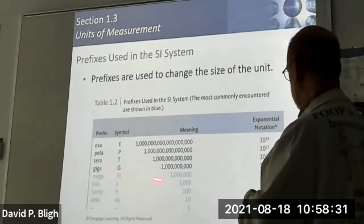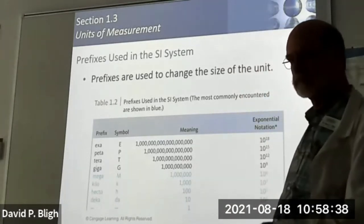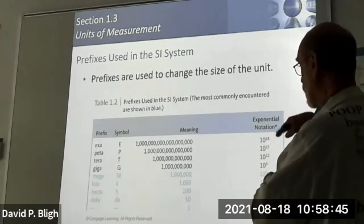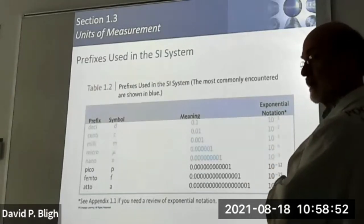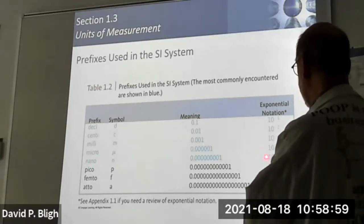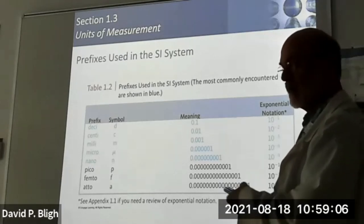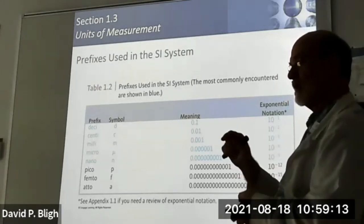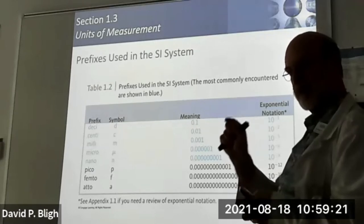We tend to weigh things in terms of grams — that analytical balance gives you the value in grams, not kilograms. You can go big with prefixes or very small. In the atomic sciences we use things like pico and femto. These are the exponential notations for those. The metric system is decimal-based — each time you move the decimal point in your number, you're going a factor of 10 bigger or smaller. That's actually the beauty of the metric system.